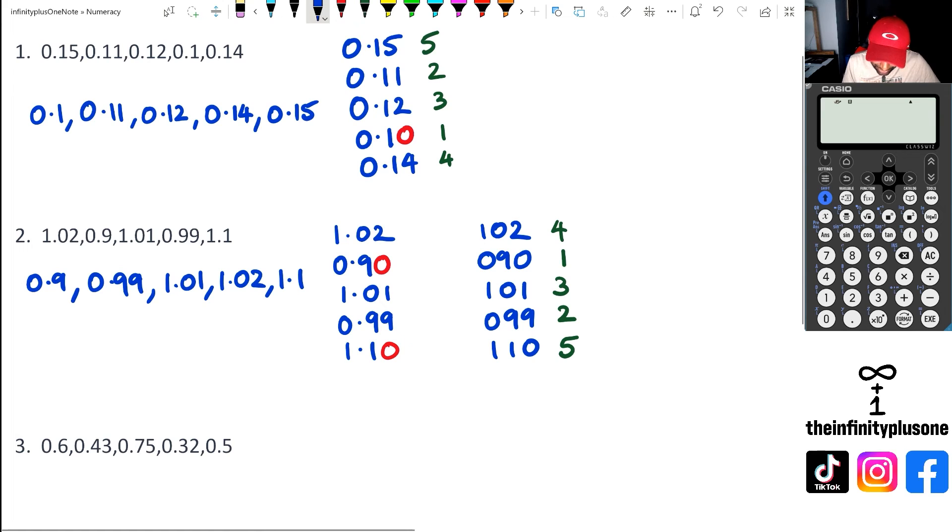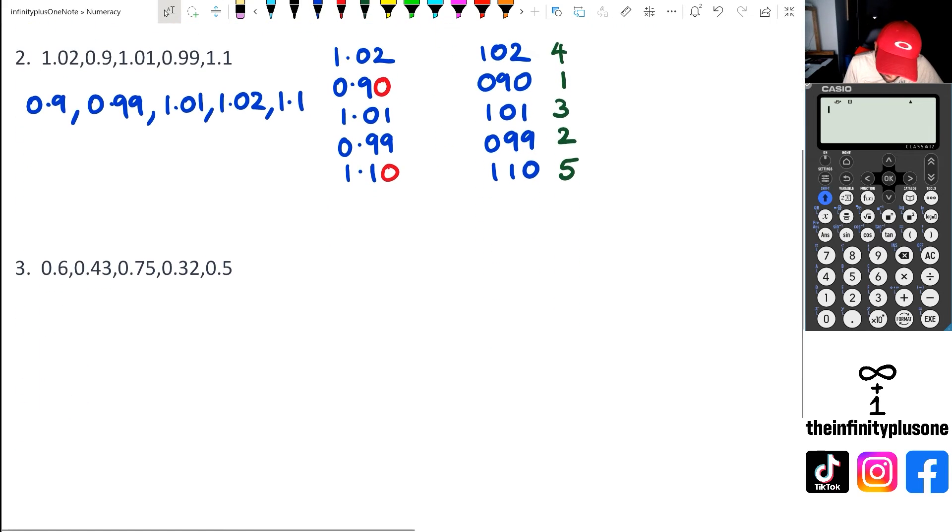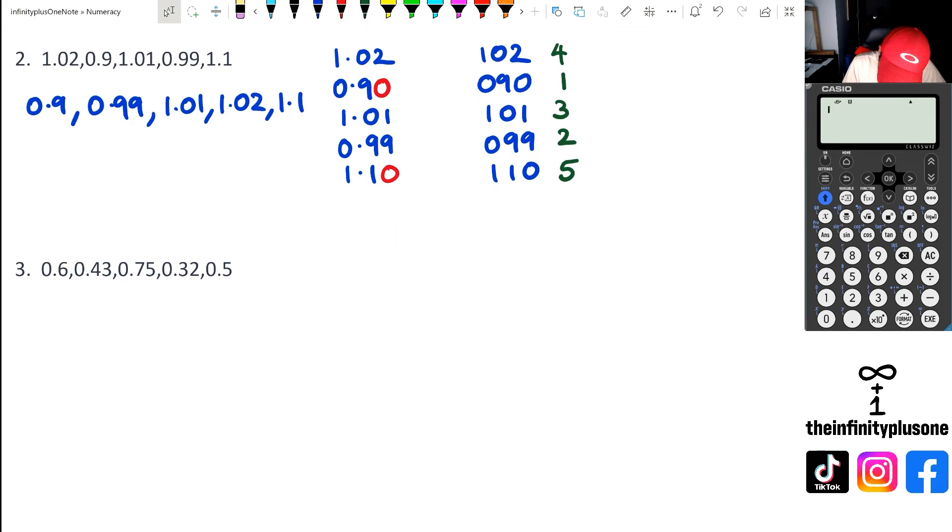Just as before, I'm going to put in 0.6, 0.43, 0.75, 0.32, and 0.5. Now as you can see, 0.6 and 0.5 don't have that extra zero, so I'm going to put that on the end.